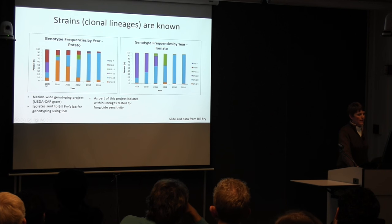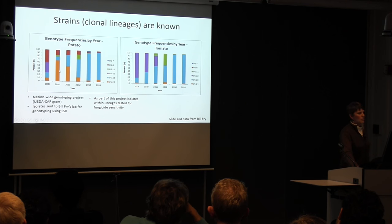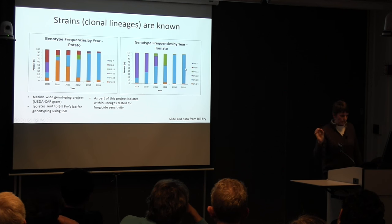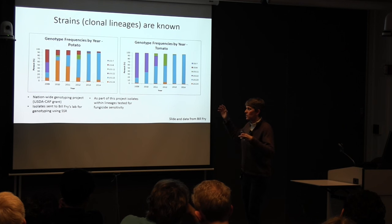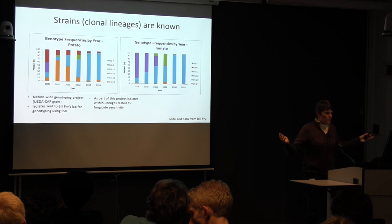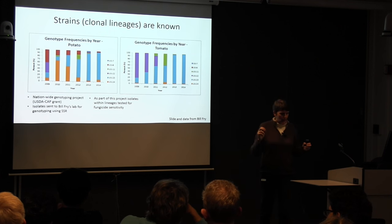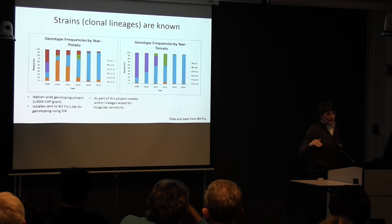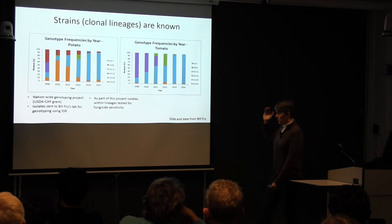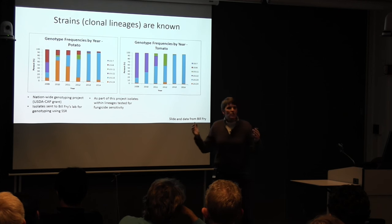Starting in 2011, we had a boost in our ability to understand P. infestans because about 28 labs across the country were involved in a USDA CAP grant. As part of that, people from around the country sent P. infestans isolates to Bill Fry's lab, and he genotyped them using microsatellites within 24 hours and got that information back to them. This was great for people because they knew what clonal lineage they were working with, and it also gave us a huge collection of isolates.